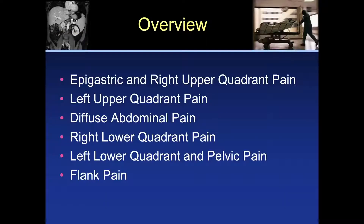As an overview, we're going to look at the different anatomic areas: epigastric and right upper quadrant pain, left upper quadrant pain, diffuse abdominal pain, right lower quadrant, left lower quadrant, and then pelvic or flank pain.